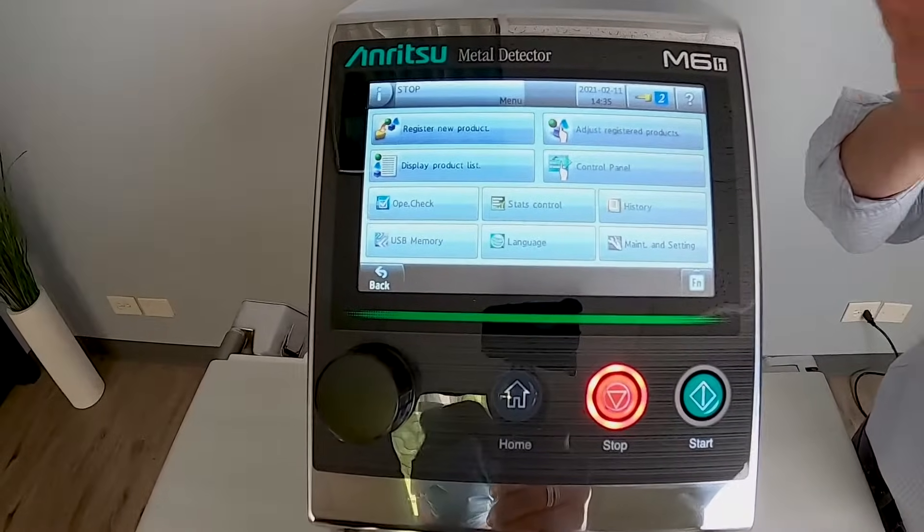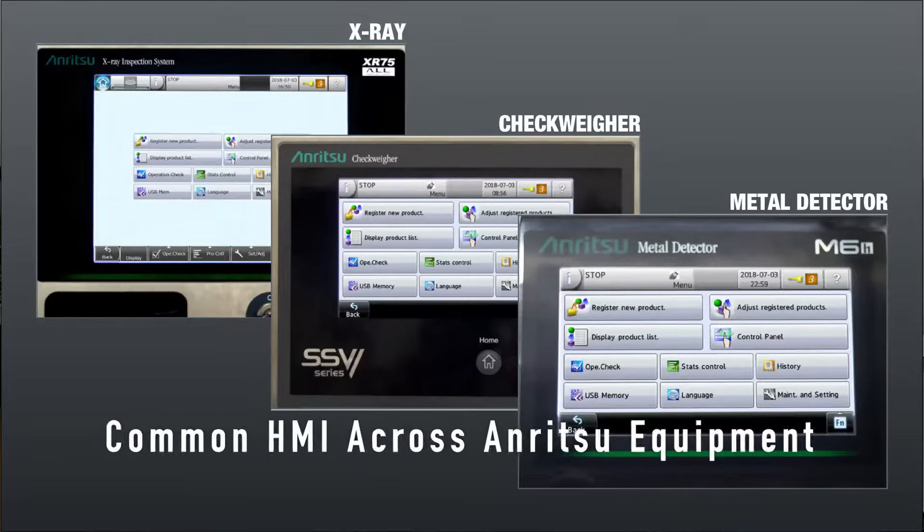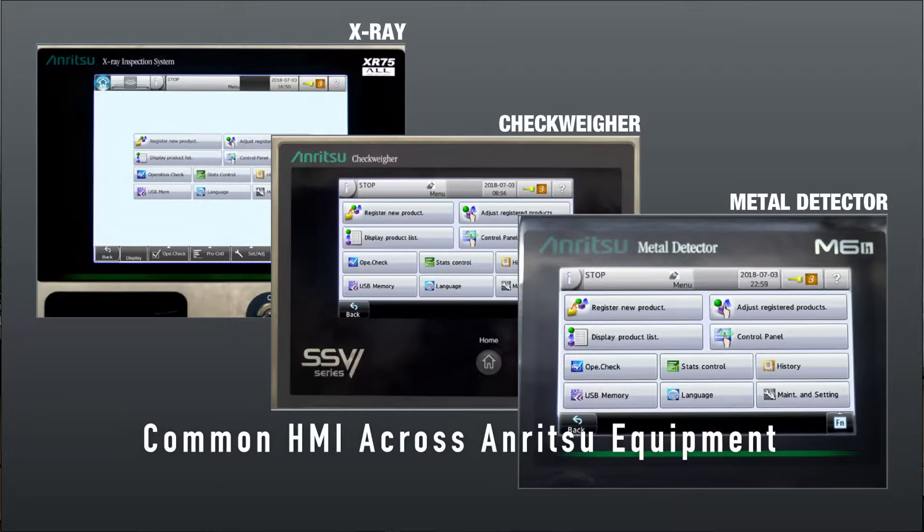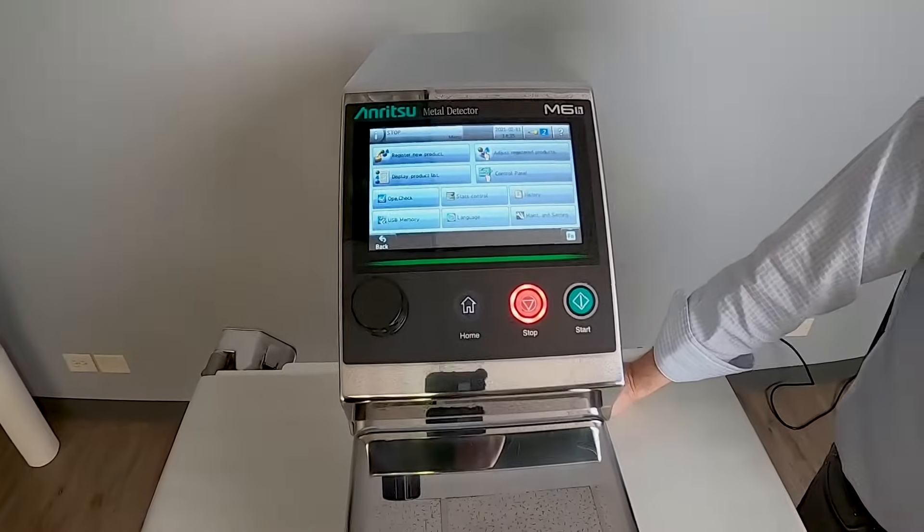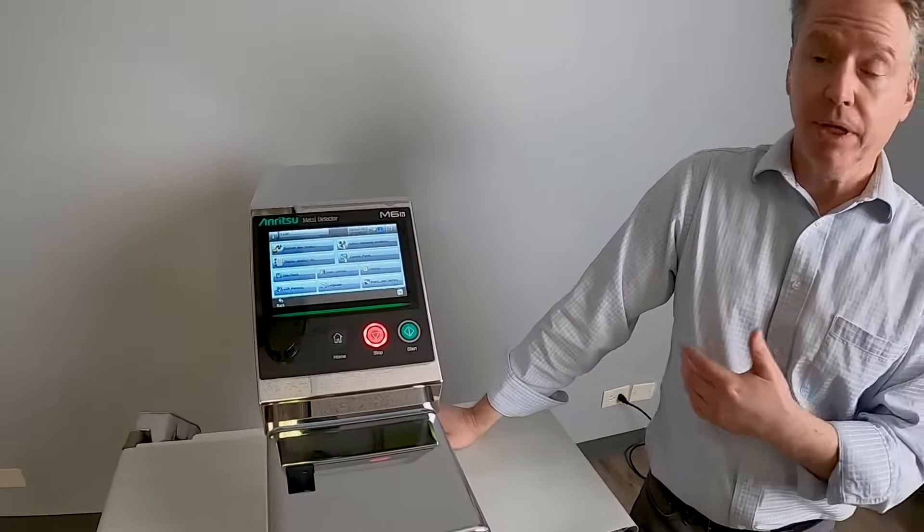The settings on this M6 metal detector in the user interface is identical to our checkweir. So when it comes to having an operator quickly learn our software or learn all the software for all three units, x-ray, checkweir, or metal detector, very easy to do with the Enritsu product lines.